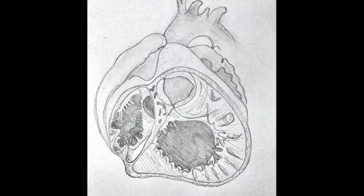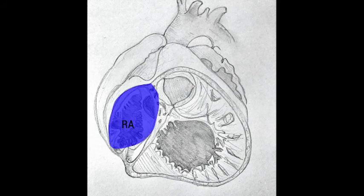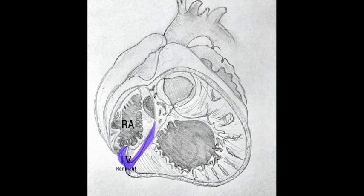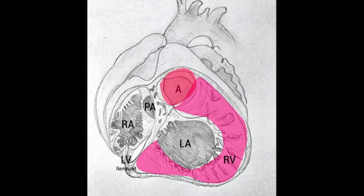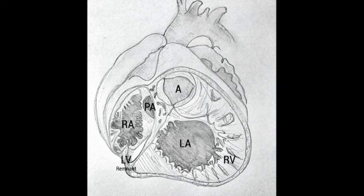This image shows the connection between the morphologically right atrium, the systemic collecting chamber, connected to the morphologically left ventricle and the pulmonary artery, and the morphologically left atrium, the pulmonary venous collecting chamber, connected to the morphologically right ventricle and the aorta. This arrangement results in physiologically corrected but not anatomic circulation.